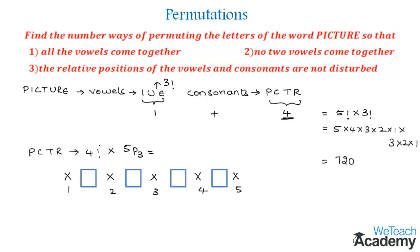The value of four factorial is 24, and 5P3 can be calculated using the formula n! / (n − r)!, which gives 60. Multiplying 24 and 60 we get 1440.